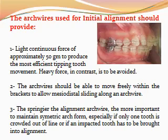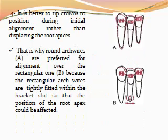The arch wire should provide light continuous force and should be able to move freely within the bracket. The more important it is to maintain symmetric arch form, the more critical the spring wire choice. It is better to tip crowns into position during initial alignment rather than displacing the root apices. This is why round arch wires are preferred for alignment over rectangular ones, because rectangular arch wires are tightly fitted within the bracket slot so that the position of the root apex could be affected.